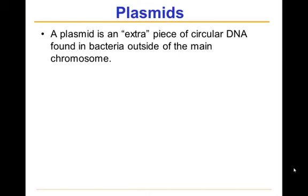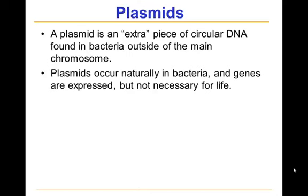The thing about a plasmid is that it has the ability to be replicated. So when the single chromosome inside a bacterium is replicated, so is the plasmid. Plasmids are also how bacteria can sometimes pick up extra genes — something eukaryotes just don't really do. A bacterium can actually pick up a gene in the environment by taking in parts of a dead bacterium and its plasmid, which can then be passed on to the progeny. So plasmids occur naturally in bacteria, and their genes are expressed, but they aren't necessary for life.